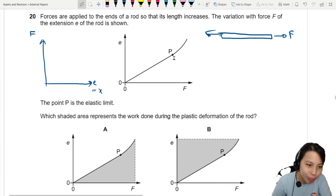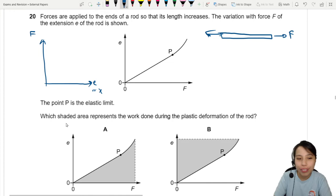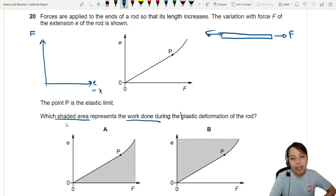The point P is the elastic limit. Which shaded area represents the work done during, very specific, plastic deformation of the rod? Because there are many sections where you could have work done.